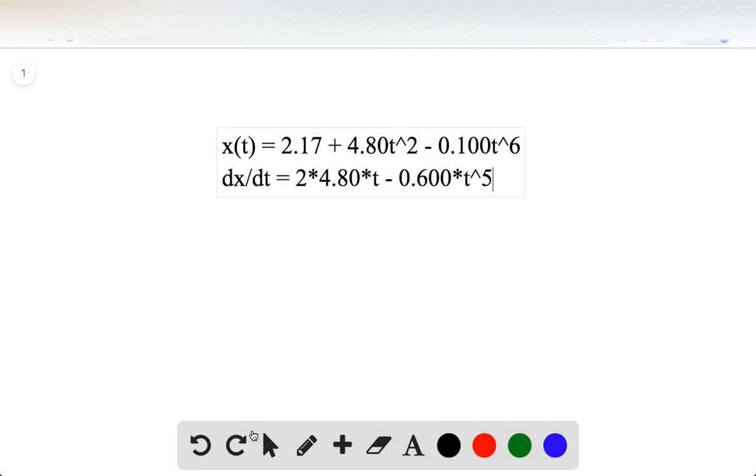And we said we wanted to find its position when its velocity is zero, so set this equal to zero and solve for t.